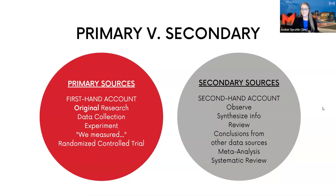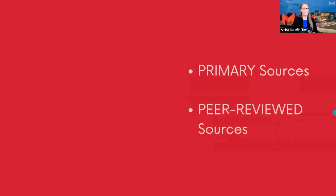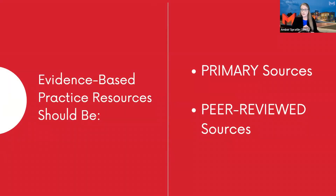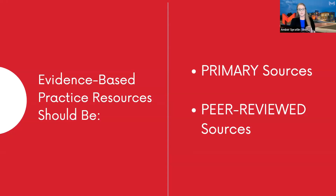Your resources should be primary and peer-reviewed. We don't want to pull things out of the open web where we normally get our news — we want to make sure it's coming from a scholarly academic journal, and then we also want to make sure those are primary sources.